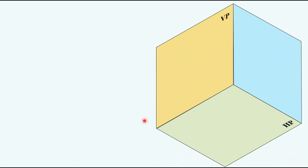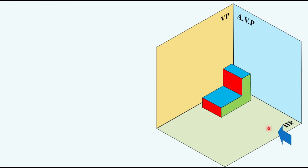Now let us say we have a horizontal plane, a vertical plane, and another plane called AVP — the auxiliary vertical plane. The first quadrant is above HP and in front of VP. We are looking from this side. Let us say this is the object given to us. I have used different colors to help you understand the different views. This is the object kept in the first quadrant, so we are talking about the first angle projection method first.